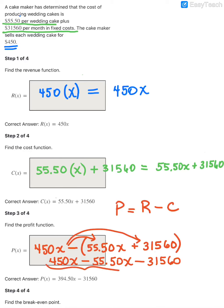When I combine these like terms, that is going to leave me with $394.50 per wedding cake. So that's the profit they're making per wedding cake. But then you still have to subtract off those fixed costs of $31,560. So this would be our profit equation in that case.